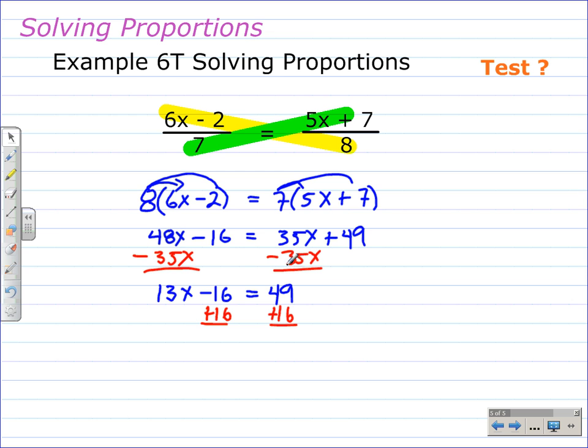Next we undo the subtract 16 by adding 16 to both sides. On the left hand side negative 16 and plus 16 are opposites so they become zero. In class I say they cancel. On the right we simplify 49 plus 16 to give 65.